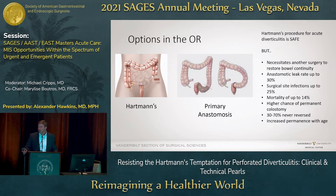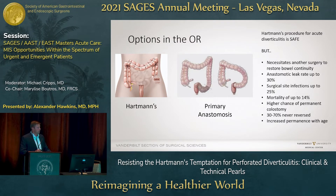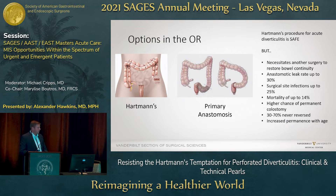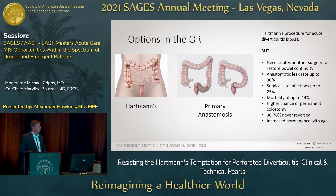I'm not going to talk about lap lavage today. I'm going to talk about what you've done when you're in the operating room surgically for perforated diverticulitis. Your two choices are: one, a Hartman's procedure where you resect the sigmoid colon and bring out the descending colon as an end colostomy; or second, a primary anastomosis where instead you create a colorectal anastomosis with or without a diverting loop ileostomy.